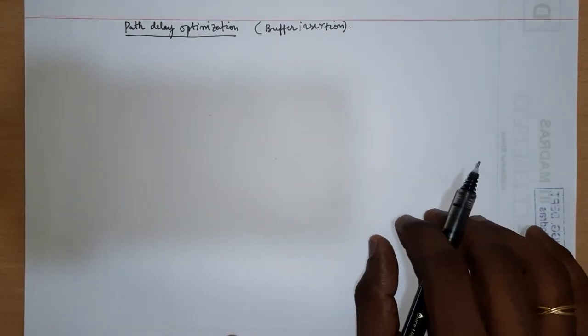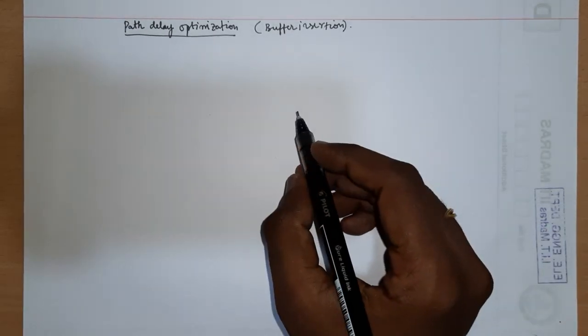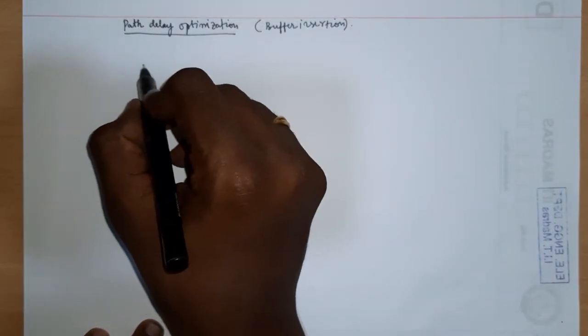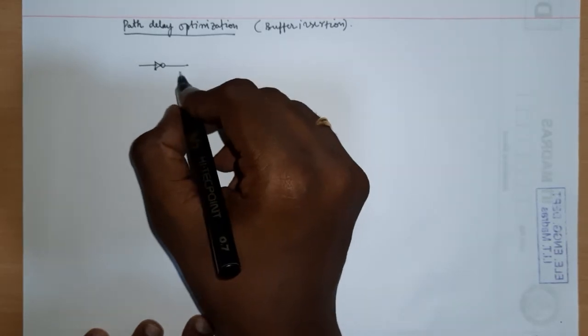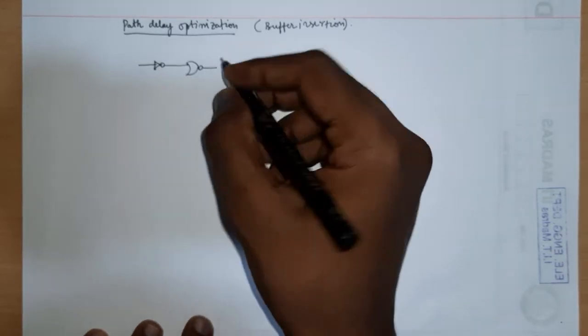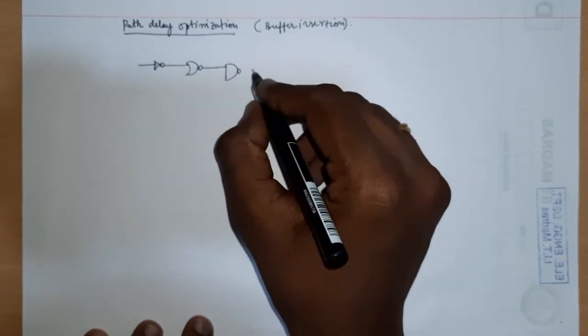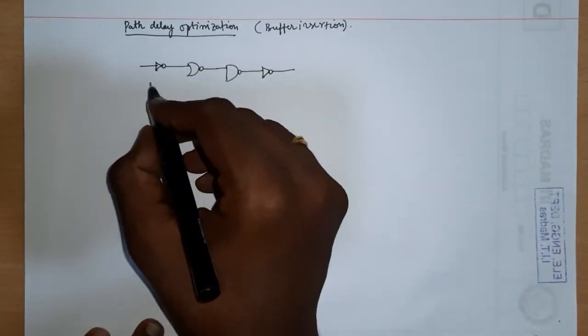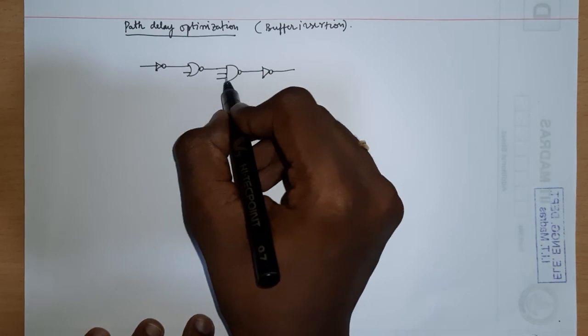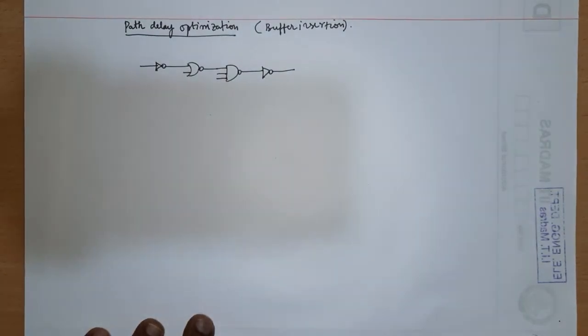What we have done so far is we have defined certain terms like logical effort, electrical effort, and so on. We figured out that if you are given a path with logic gates and their inputs and sizes are specified — or their input and load capacitances are specified for each gate in the path — then you can estimate the total path delay. Let's take the same example: a NOR gate, an OR gate, a NAND gate, and a NOR gate again. The NOR was two-input, NAND was three-input, and NOT is single-input.